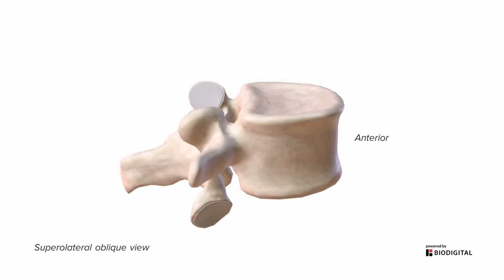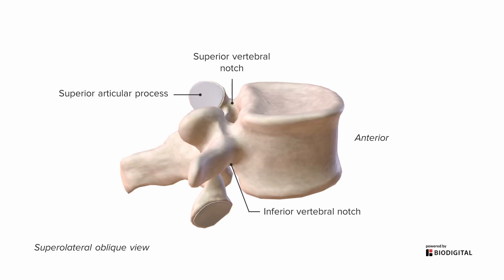Here we have a vertebra from a tilted oblique view from a superior lateral angle on the right side. From the side we can see there's a notch superiorly called the superior vertebral notch between the body and the arch. Just posterior to that is a flat plate called the superior articular process. Similarly, there's an inferior vertebral notch separating it from the inferior articular process. Articular means related to a joint, and this is where one of the joints of the vertebral column is located.